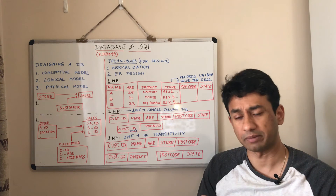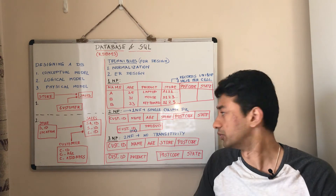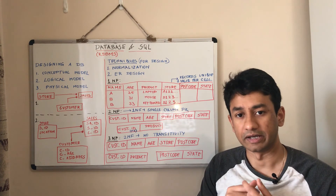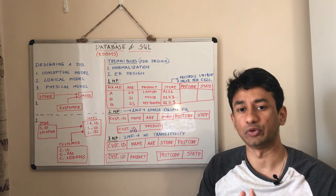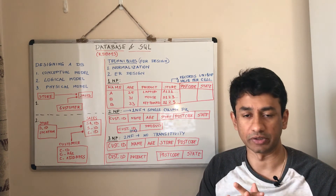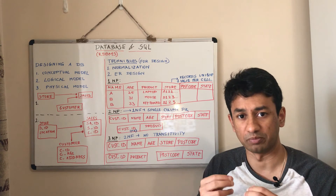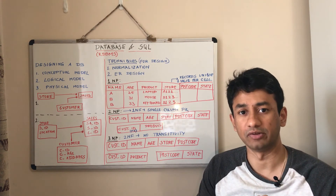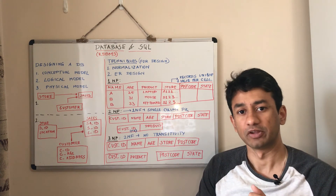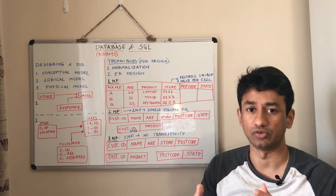The next technique is entity relationship design — this involves identifying various objects like customer, store, sales, and postcode, and then identifying the relationships between them. Using this approach, we design a proper database. We will go into the tutorial and I will show you using MySQL Workbench how to create an entity relationship model, and also how to reverse engineer an existing database to get the entity relationship model for it.